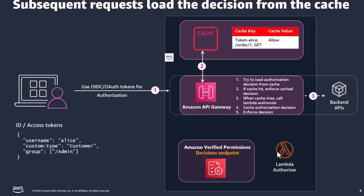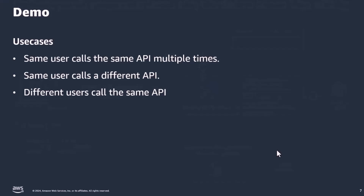Rather than explain this at the architectural level, I thought — why not demo this? I set up a quick demo as part of this video using a sample application that I have set up in API Gateway. This sample application uses Amazon Verified Permissions with the Quick Start method to protect its APIs. The application is a pet store and has two users: Alice and Abby. Alice is a reader and is only allowed to call GET APIs. Abby, on the other hand, is an admin and is allowed to call all APIs.